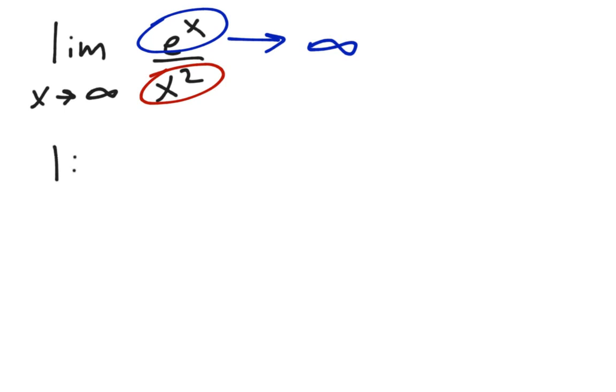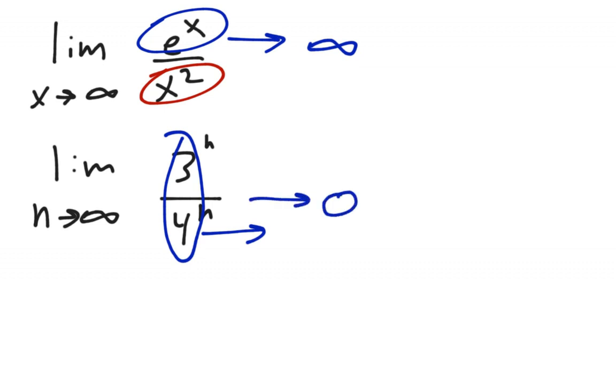Another problem, let's say we look at the limit as n approaches infinity of 3 to the n over 4 to the n. Now, these are in the same family of functions. These are both exponential functions. However, the bottom 4 to the n will grow to infinity faster than 3 to the n. And so this limit will be 0. So within a family of functions, there are obviously relative growth rates. It's sort of like how x squared and x cubed come from the same family, but this gets to infinity faster than x squared.